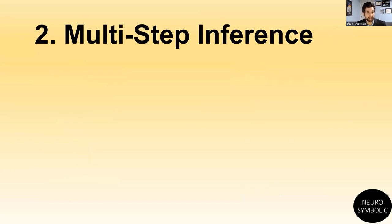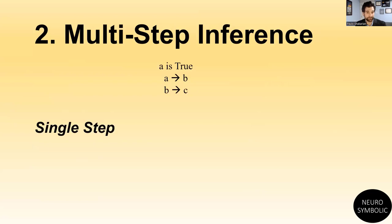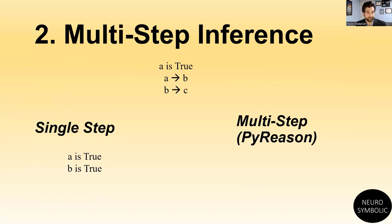The next key idea is multi-step inference. For example, given three logical statements — A is true, A implies B, and B implies C — if we only allow one step of inference, we can only conclude that A and B are true. However, with multi-step inference, which is what PyReason supports, you get the complete set of what's entailed: A, B, and C. Bear in mind, we kept this simple in the propositional case; PyReason supports a full first-order logic as well as the annotations for open-world reasoning.